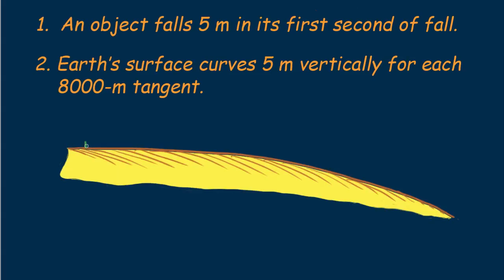The second thing you need to know is how round earth is. A geometrical fact about the curvature of earth is that its surface drops a vertical distance of five meters for every 8,000 meters tangent to its surface. 8,000 meters is 8 kilometers.